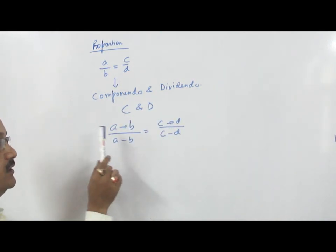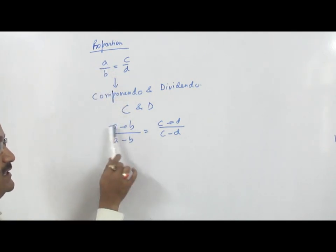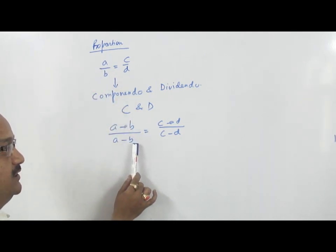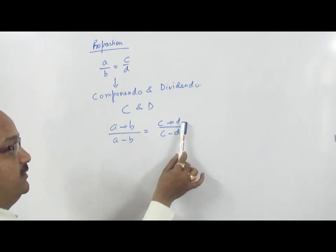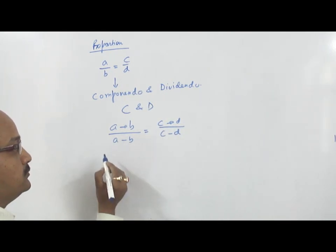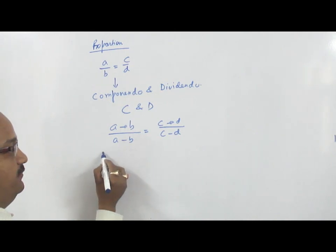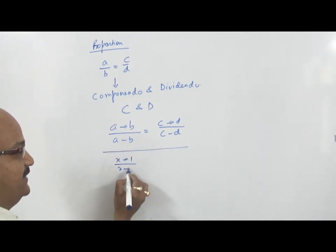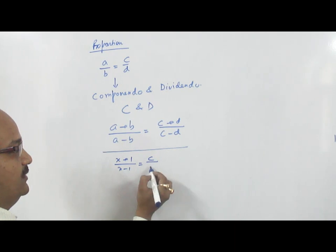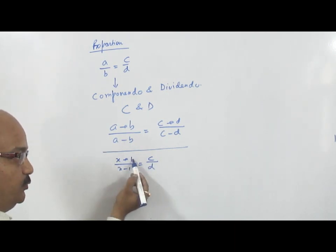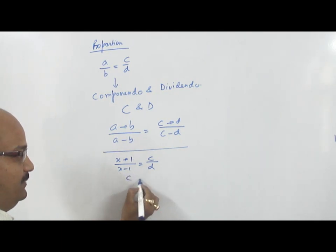See — numerator plus denominator upon numerator minus denominator is equal to numerator plus denominator upon numerator minus denominator. Now, if we have a question like X plus 1 upon X minus 1 is equal to C upon D, these two values are the same but the sign is plus and minus. So we will apply C and D.